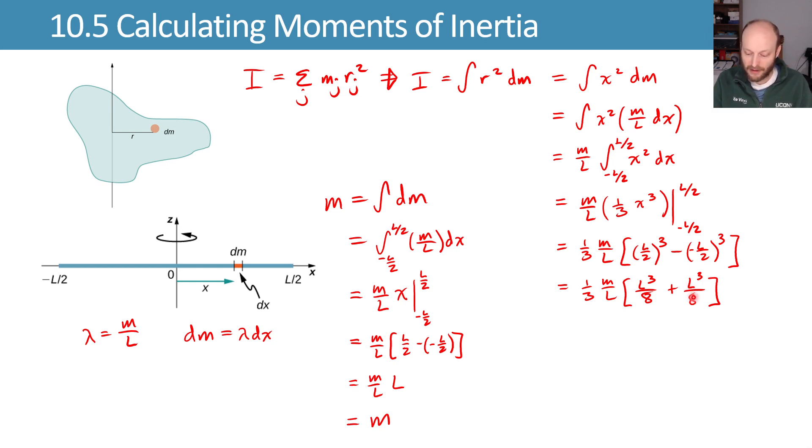Adding those together, you end up with a one-quarter from the inside. So one-third M over L times L cubed times one-quarter. And one-third times one-quarter then gives us one-twelfth for a final answer of our moment of inertia being one-twelfth ML squared.